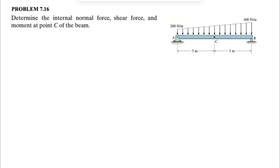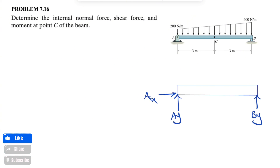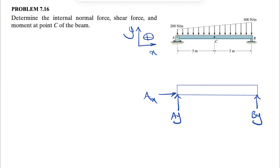Let's start with the free body diagram of the whole beam. We have the force By here. We have a pin at point A, which means we have both X and Y components. At support B we only have a Y component, since it's a roller — it can move freely in the X direction. So since we don't consider any friction for the roller, there is no X component there.